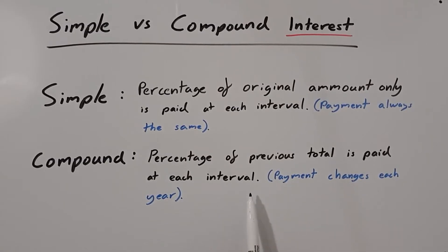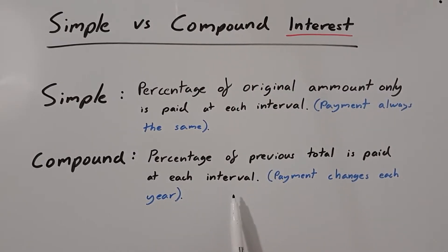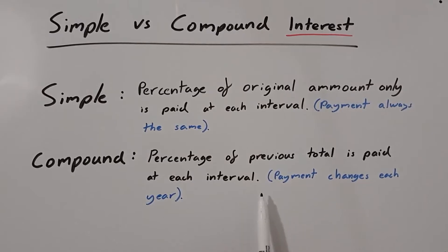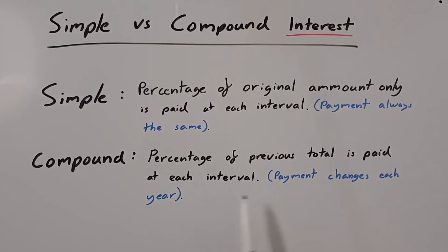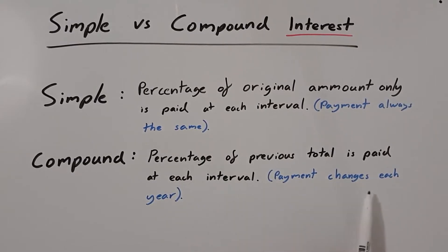So now our total is £1,100, and we take 10% of that which is £110. So now we've got £1,100 plus £110 giving us £1,210. This means the more money we have in the account the more interest we'll earn, because the interest rate stays the same but it's always earning the same percentage on a higher total. So the payments each year will change and they will get bigger.